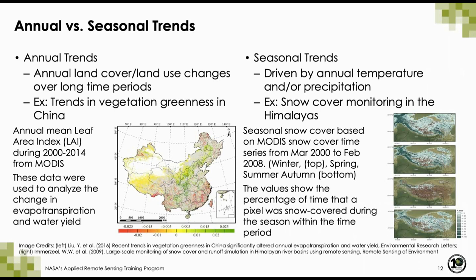Annual trends include assessing changes over long time periods. Typically, projects might choose one month out of each year or calculate the annual mean of a remote sensing product like NDVI. For example, a project from Liu et al. analyzed trends in vegetation greenness in China using annual mean leaf area index from MODIS between 2000 and 2014, analyzing changes in evapotranspiration and water yield. Seasonal trends are usually driven by temperature and/or precipitation cycles within a year — for example, Immerzeel et al. analyzed snow cover in the Himalayas using MODIS seasonal snow cover between 2000 and 2008.